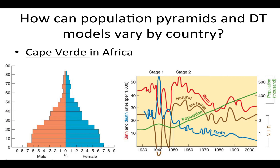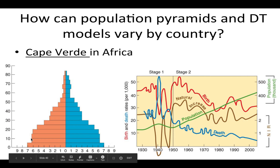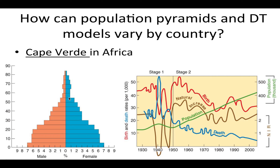Population pyramids and DTM models do vary by country due to regional variation. Looking at sub-Saharan Africa, most countries are in Stage 2. Cape Verde is no different — it shows a high CBR because of a wide base in the population pyramid, and it is very narrow at the top, meaning low life expectancy, with people dying off roughly between ages 50 and 60.